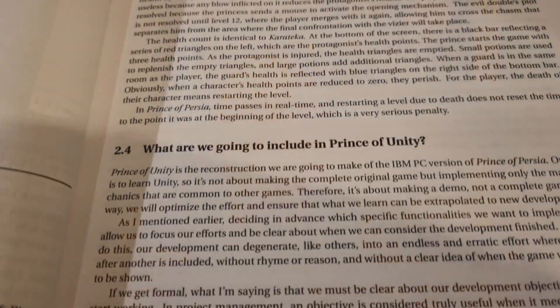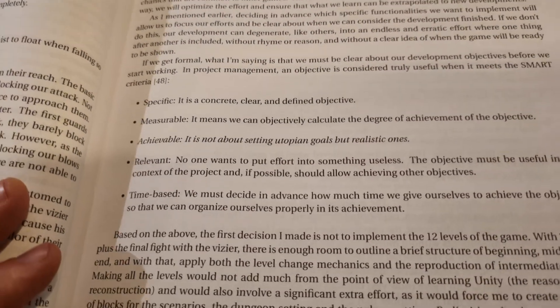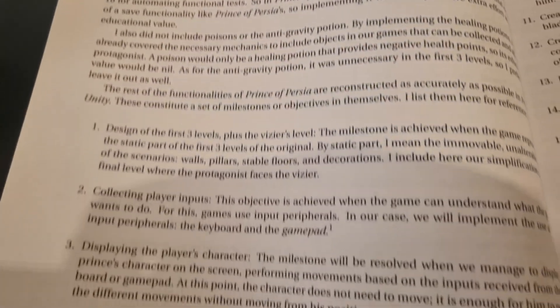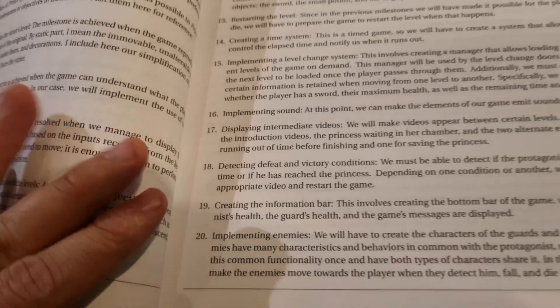Then Borgia introduces the book's project, Prince of Unity, which is not only going to reproduce the study case Prince of Persia, but will also add new features on top of it with a modern approach to the game. He even introduces the idea of smart goal setting to present the scope of the project, followed by a list of 22 items explaining all the features that we are going to add to this custom game to make it even more interesting.